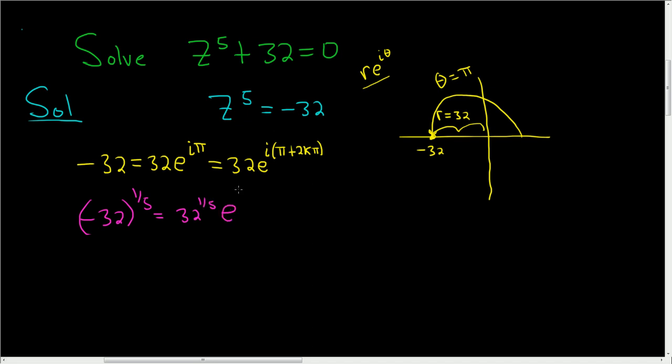We divide by 5: pi plus 2k pi divided by 5. Super fast way to do it, always works every time. So this is 2 e to the i pi plus 2k pi over 5.